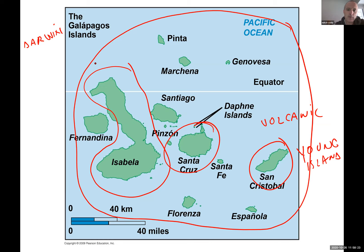Today only a few of these islands have people living on them; all the other islands are basically just there. On these islands, even though they are so close to each other, and surrounding these islands also in the water, there is a lot of diversity.